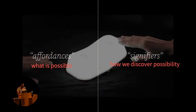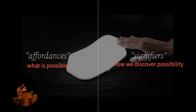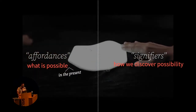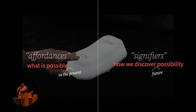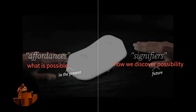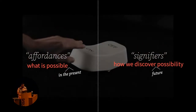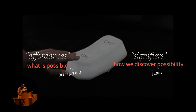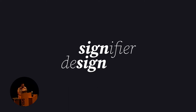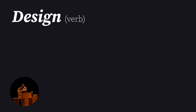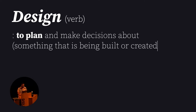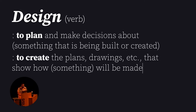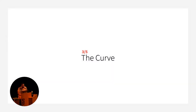When we come back to the division between affordances and signifiers: affordances are what is possible in the present, and signifiers are how we discover future possibility. We need to understand how we signify action that would change the flow. All of this talk of signifiers brings us back to design. Signifier and design are both drawn from the same source - to design is to plan towards a future we cannot see, and to create the plans that give shape to these invisible futures, to what may lie ahead of the curve.